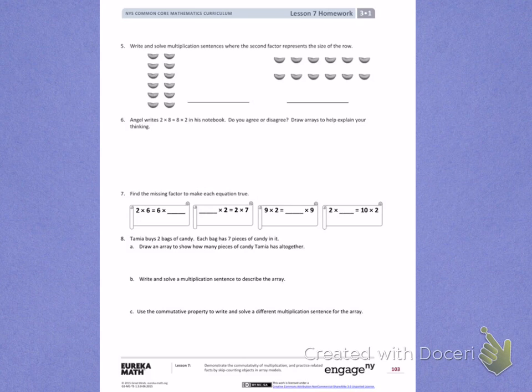Number 5. Write and solve multiplication sentences where the second factor represents the size of the row.